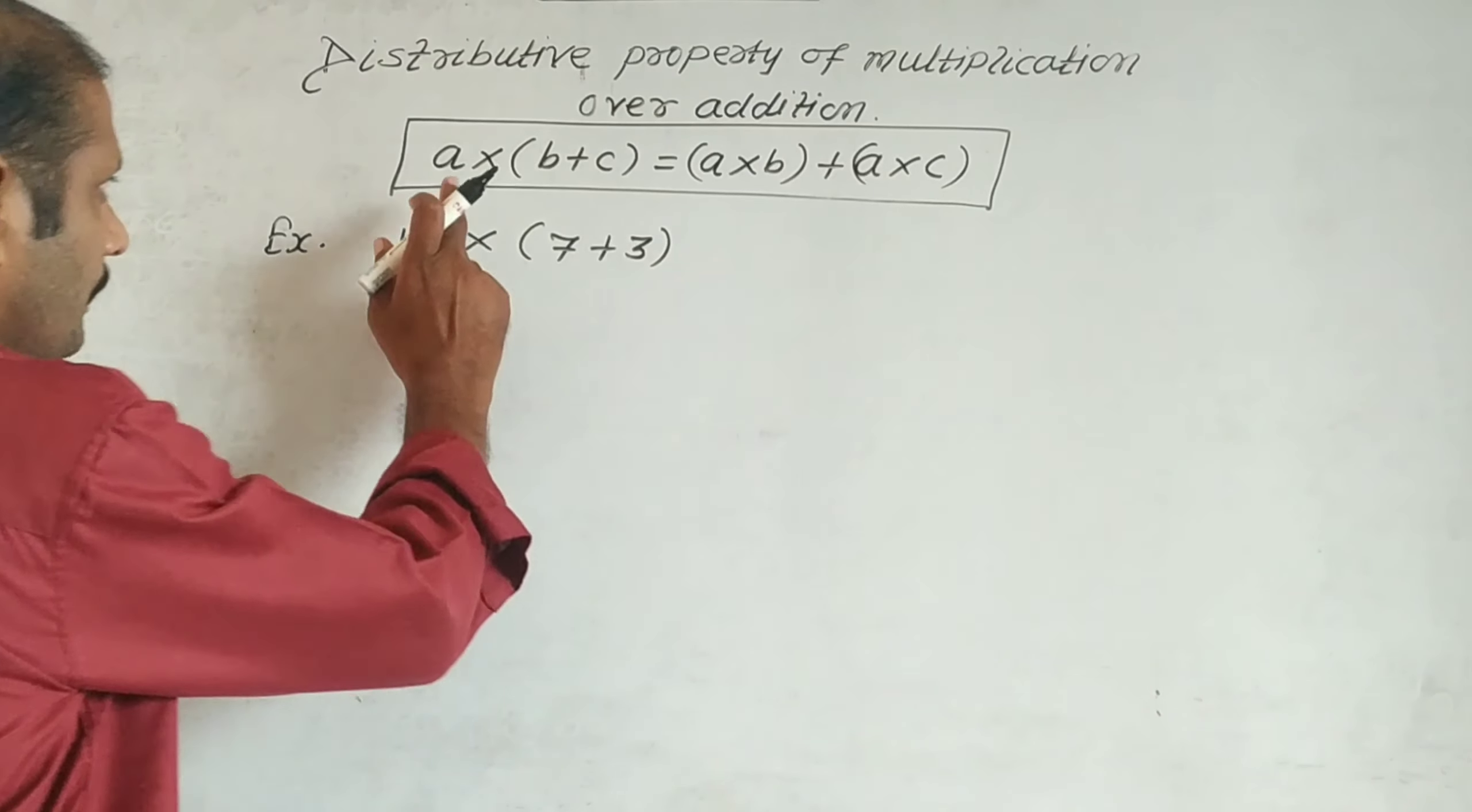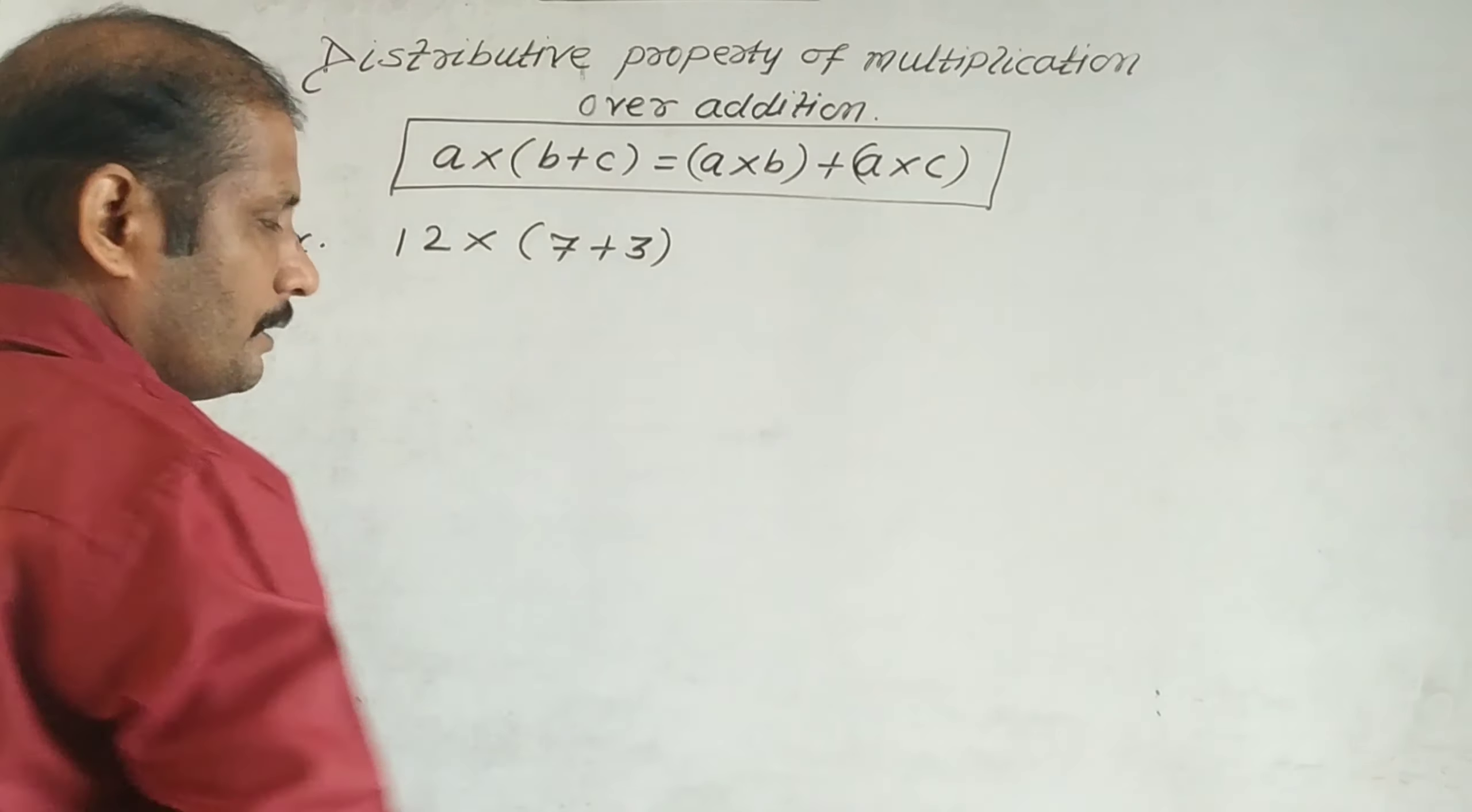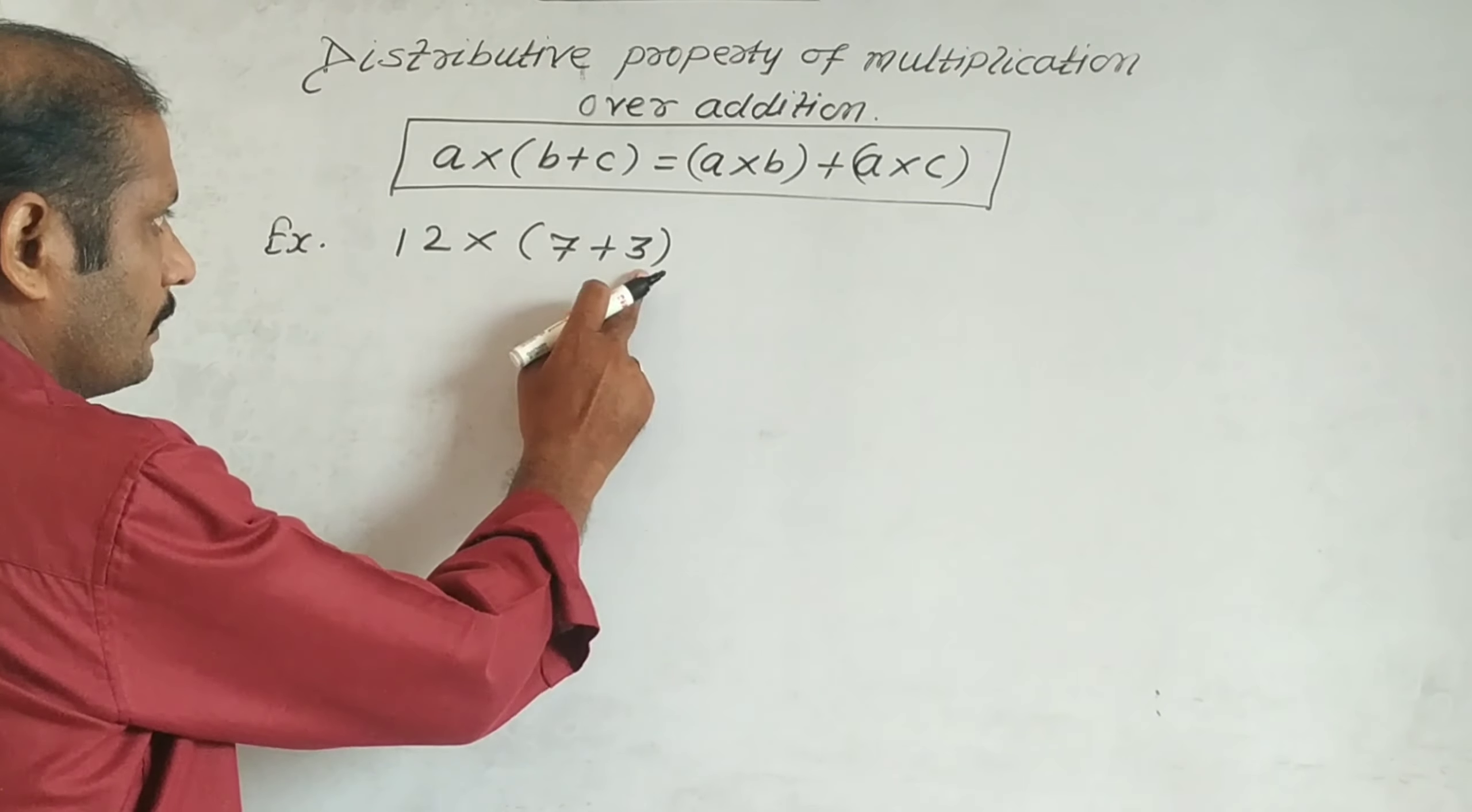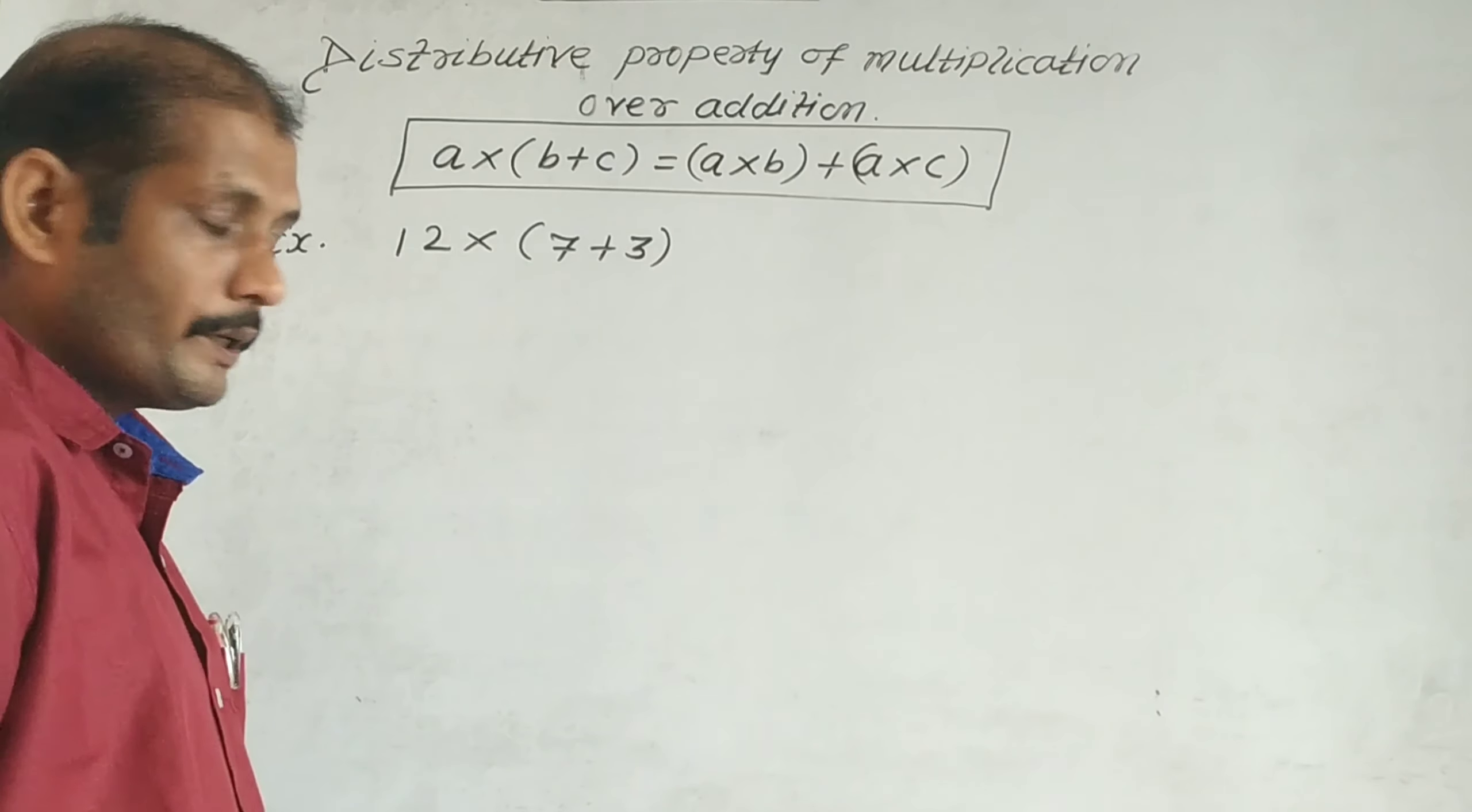So the property is: a × (b + c) = (a × b) + (a × c). It means there are two numbers, let's say 7 and 3. We need to multiply their addition by 12.